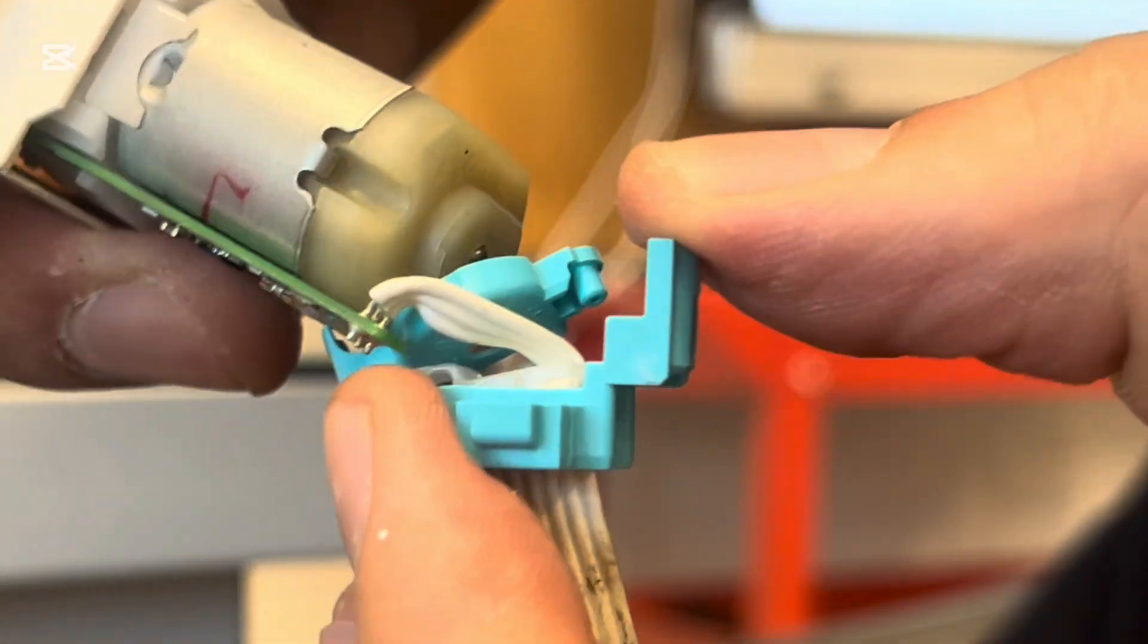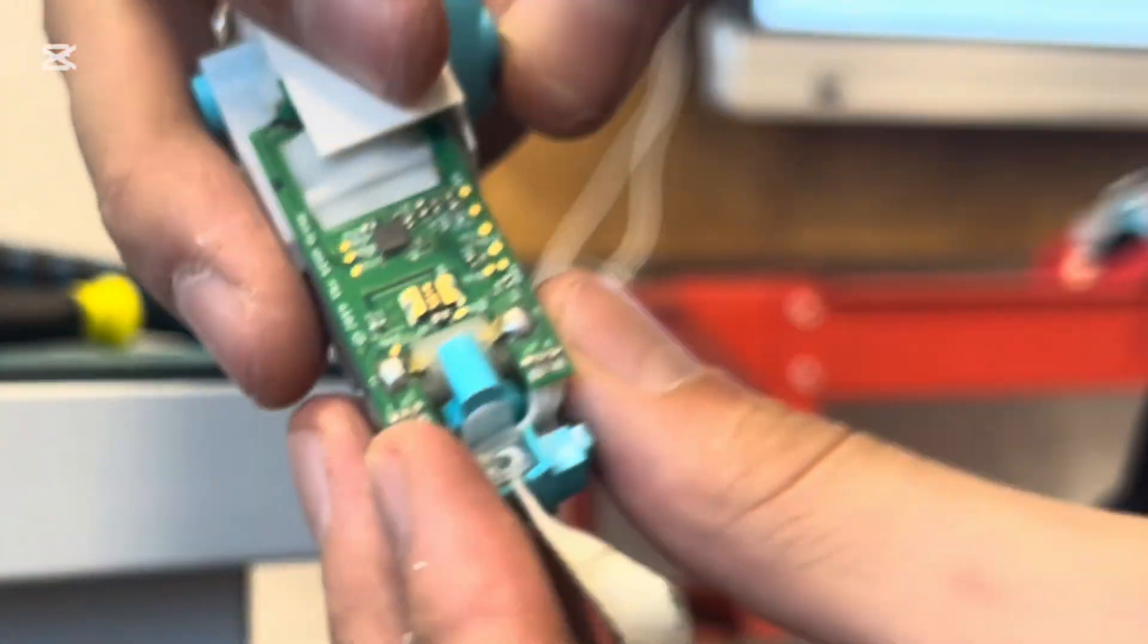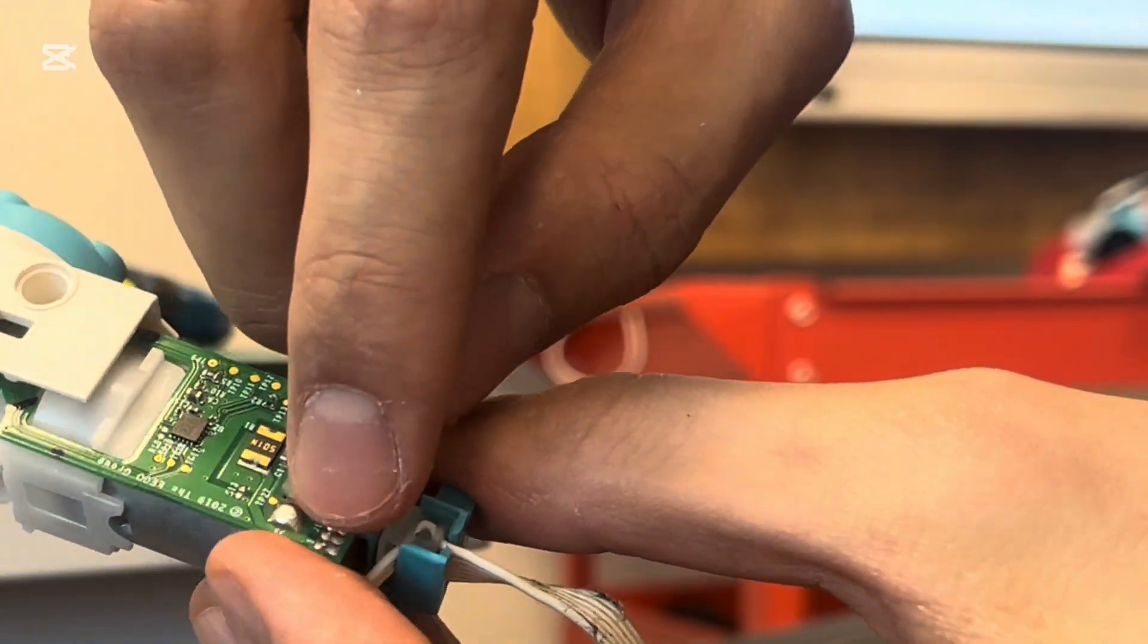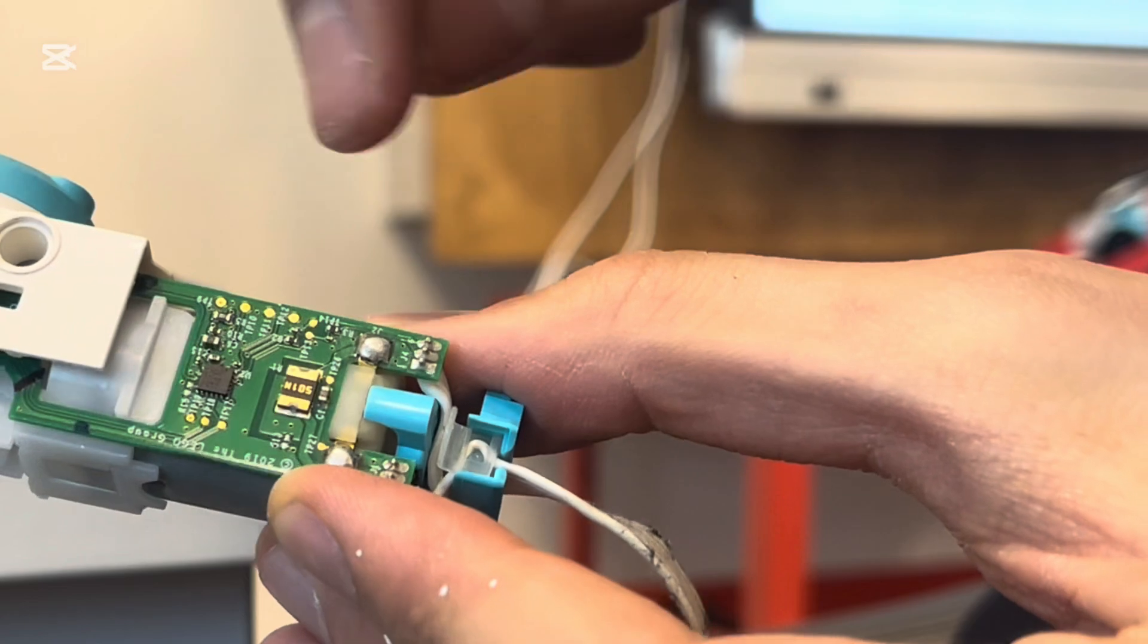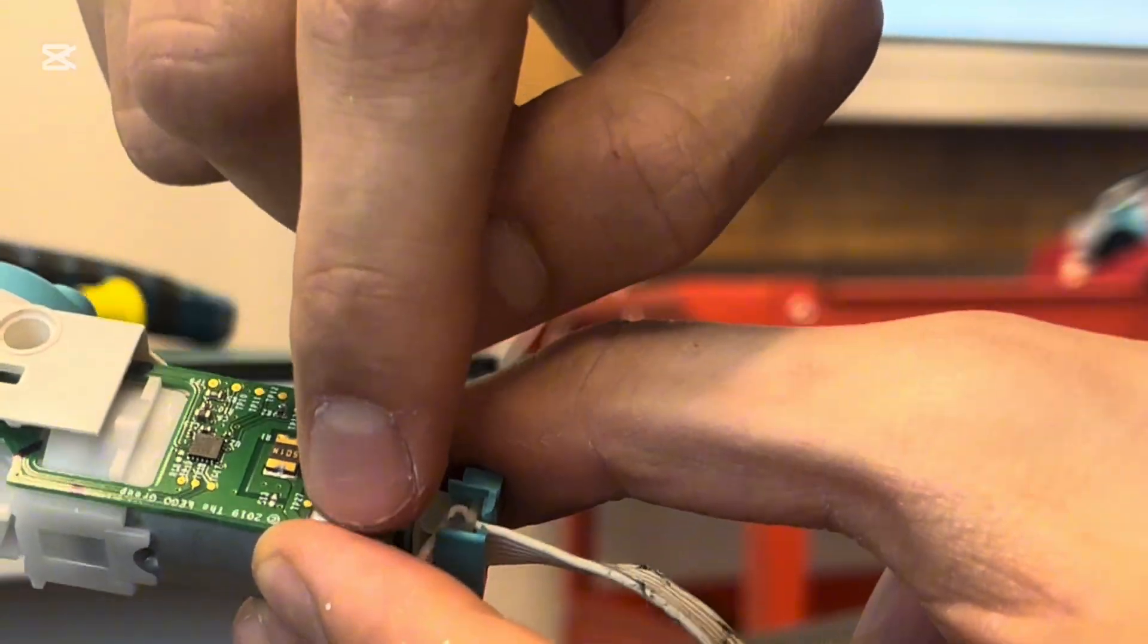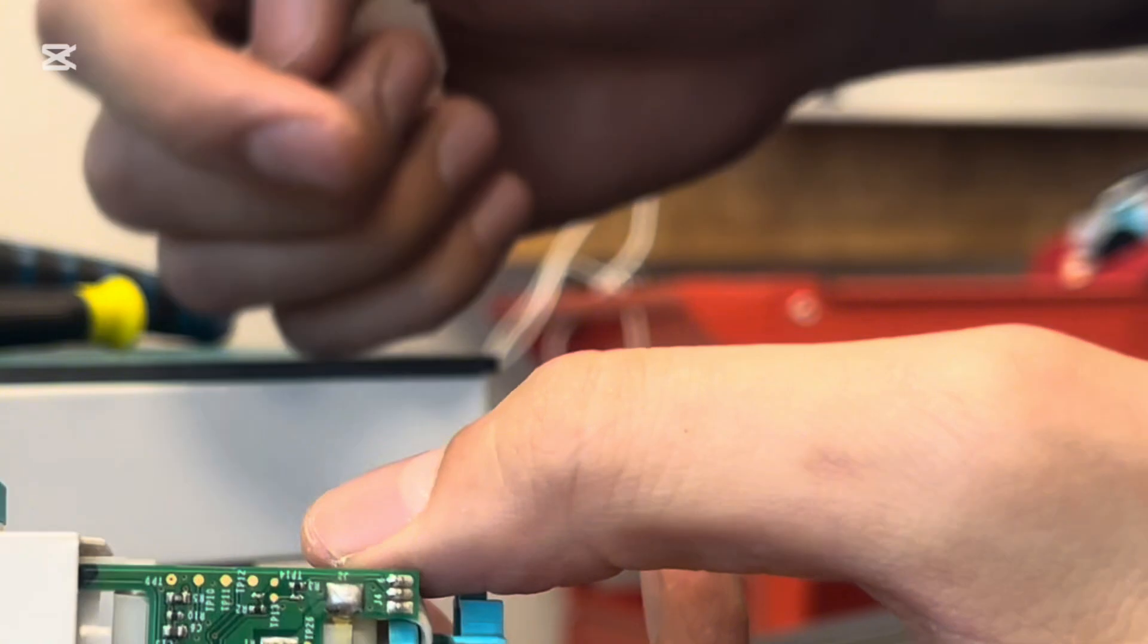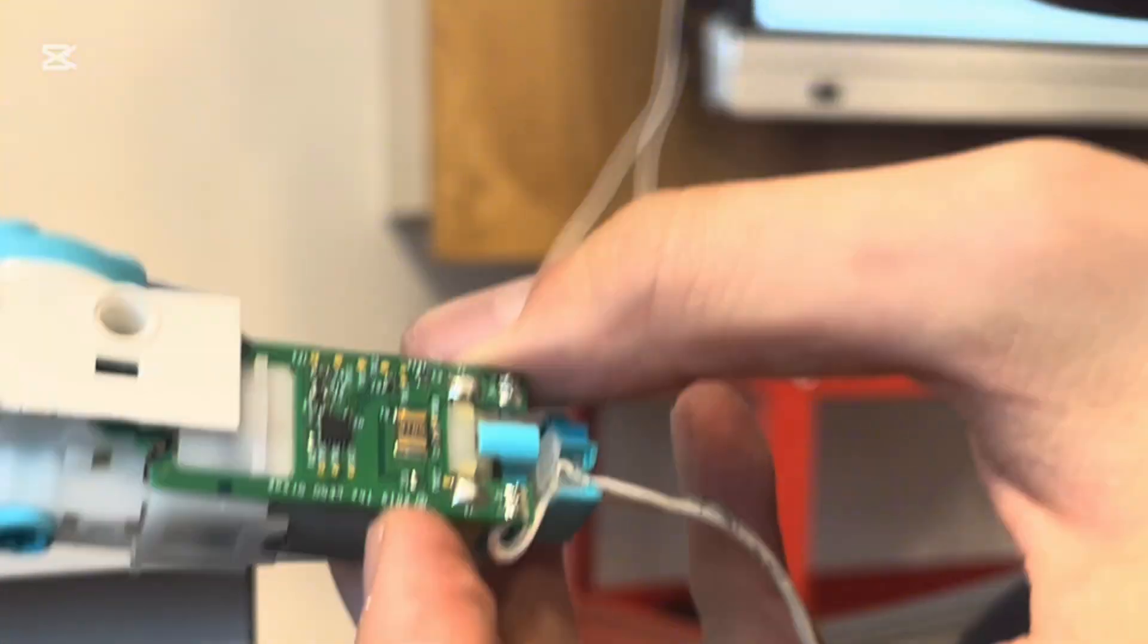And I ordered some wires from China. It has six pins, so I'll just solder, you know, take this wire off and then I'll solder the new one on top. That's how you fix it. And the assembly is very easy, much easier than opening it. Thank you for watching.